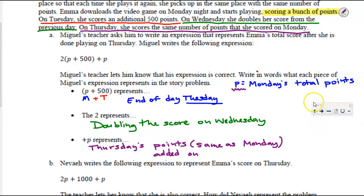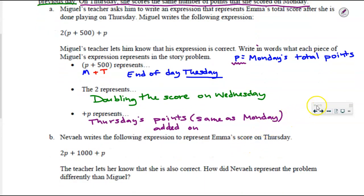Nevaeh thinks about this problem a little bit differently. Nevaeh wrote the expression 2p+1000+p and the teacher also lets her know that she's correct. Miguel was correct, Nevaeh is also correct. How did Nevaeh represent the problem differently than Miguel? Talk at your tables.